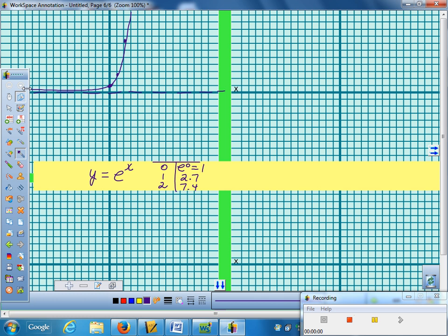Natural log is exactly the reverse. So I use that same t-table, put the 0, 1, 2 on the right, and put my 1, 2.7, and 7.4 on the left.